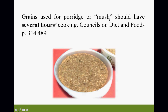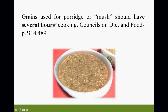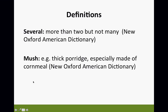The quote we've heard over and over says: 'Grains used for porridge or mush should have several hours cooking.' What is mush? It's a thick porridge, especially made of cornmeal. 'Several' means more than two but not many — that's the New Oxford American Dictionary. How many of you have read this simple statement and did not realize the amount of science behind it?